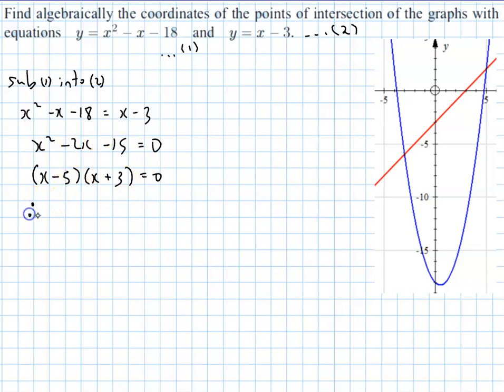Using the null factor law, each factor can equal 0. So x can equal 5 or x can equal negative 3. So our value down here, our x value is negative 3, and over here x value is 5.